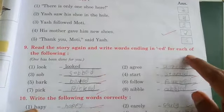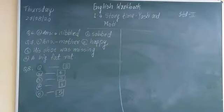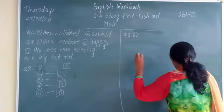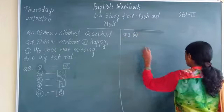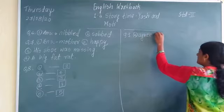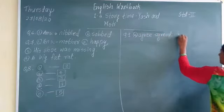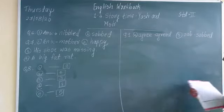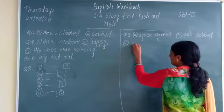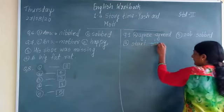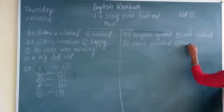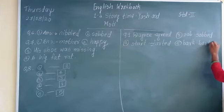Question number nine: read the story again and write words with 'ed' added for each of the following. For every word, we have to add 'ed.' The first one is already given. Second one is 'agree' — answer is 'agreed.' Third one is 'start' — answer is 'started.' Fourth one is 'bark' — answer is 'barked.' Everywhere we have to add 'ed.'